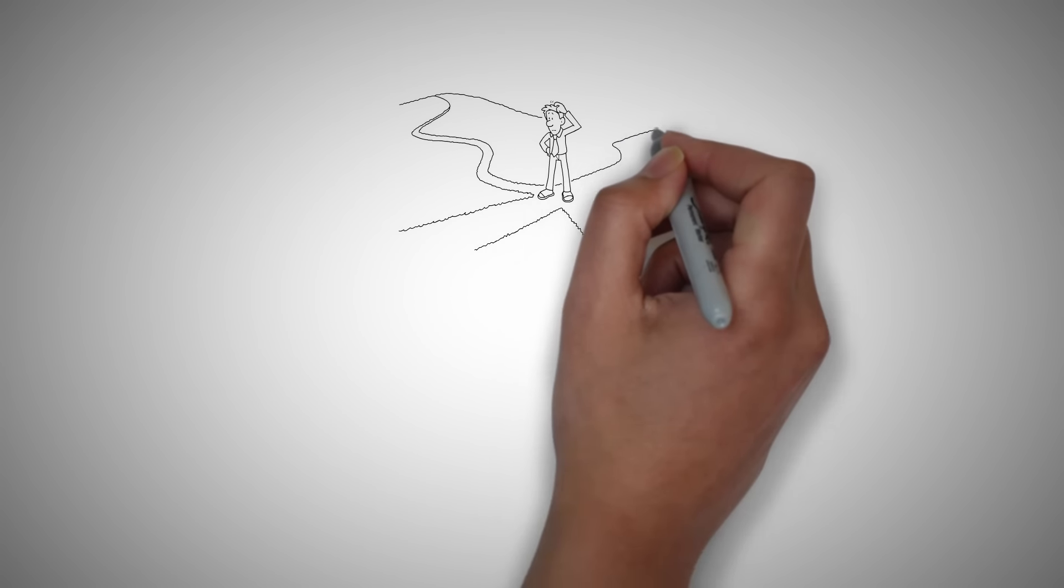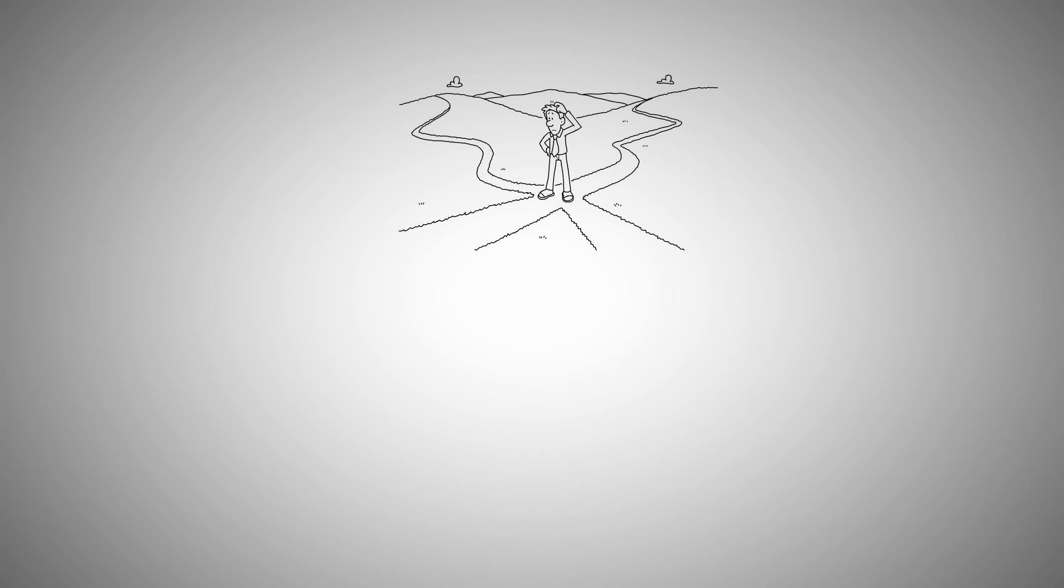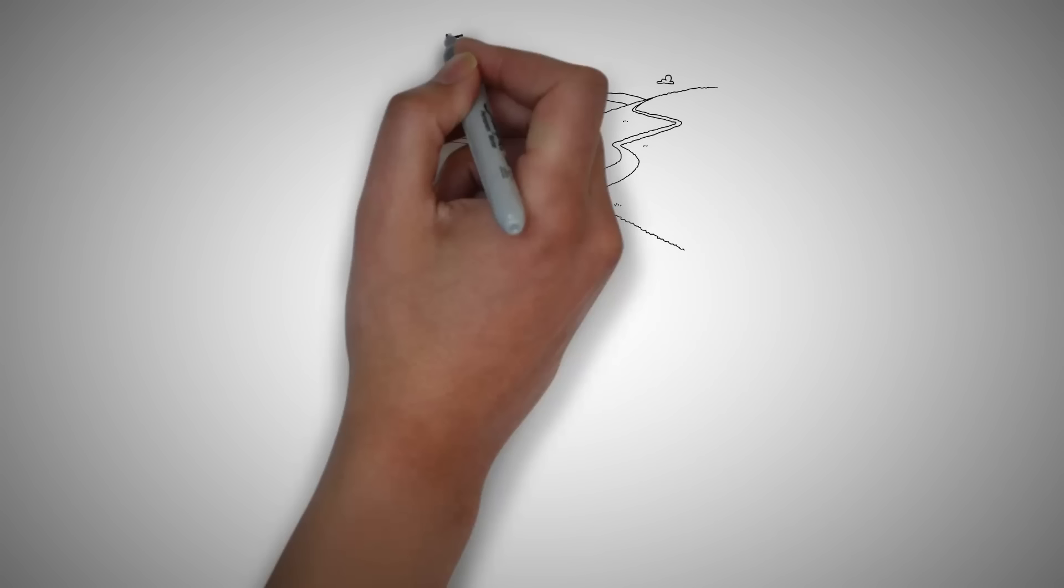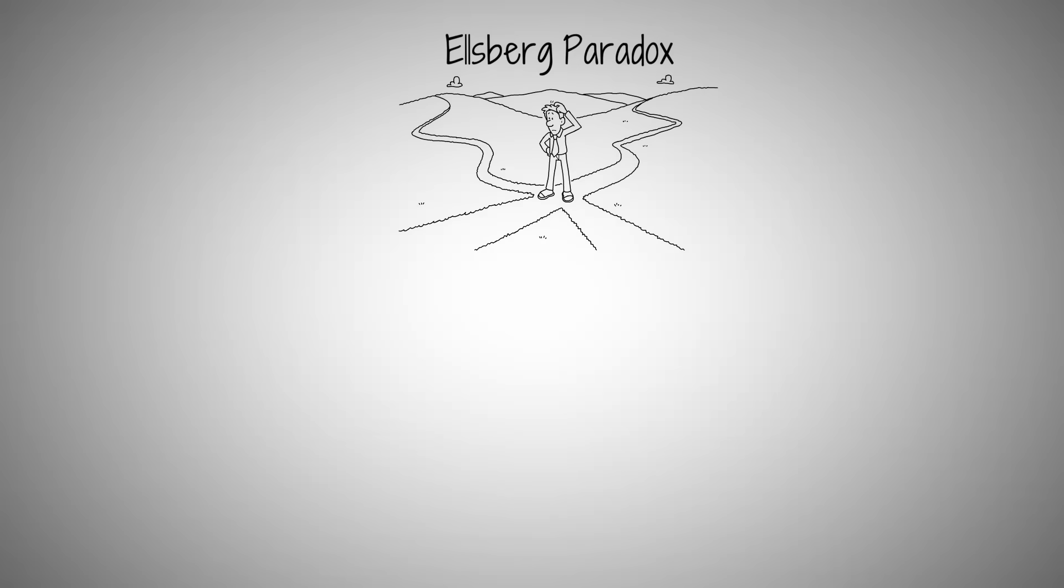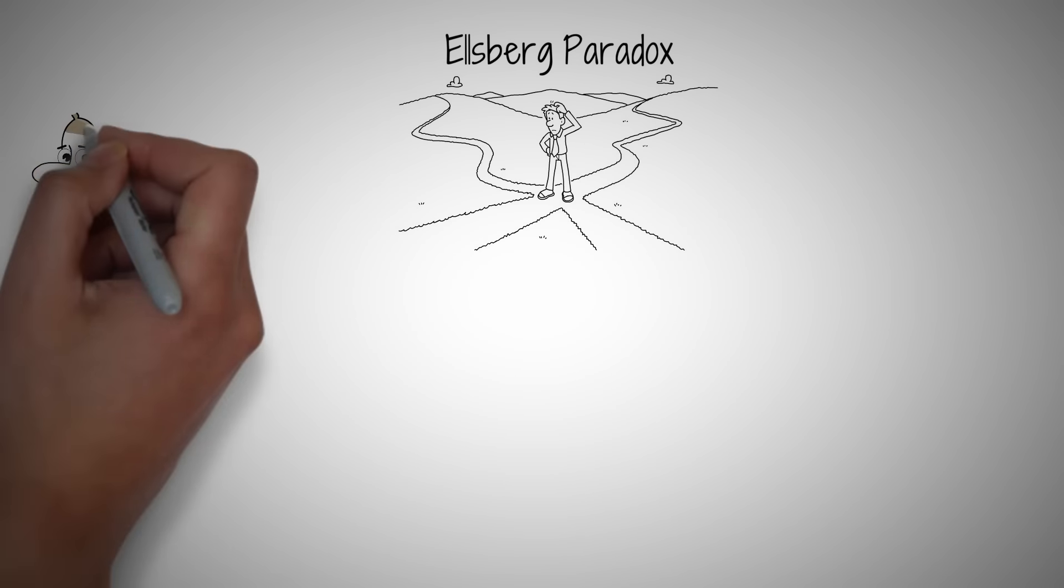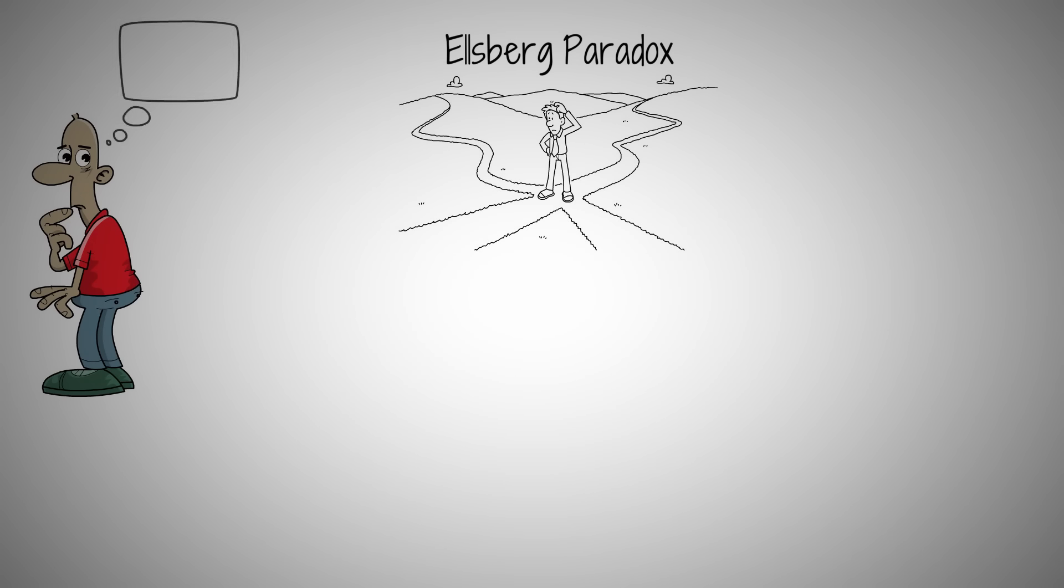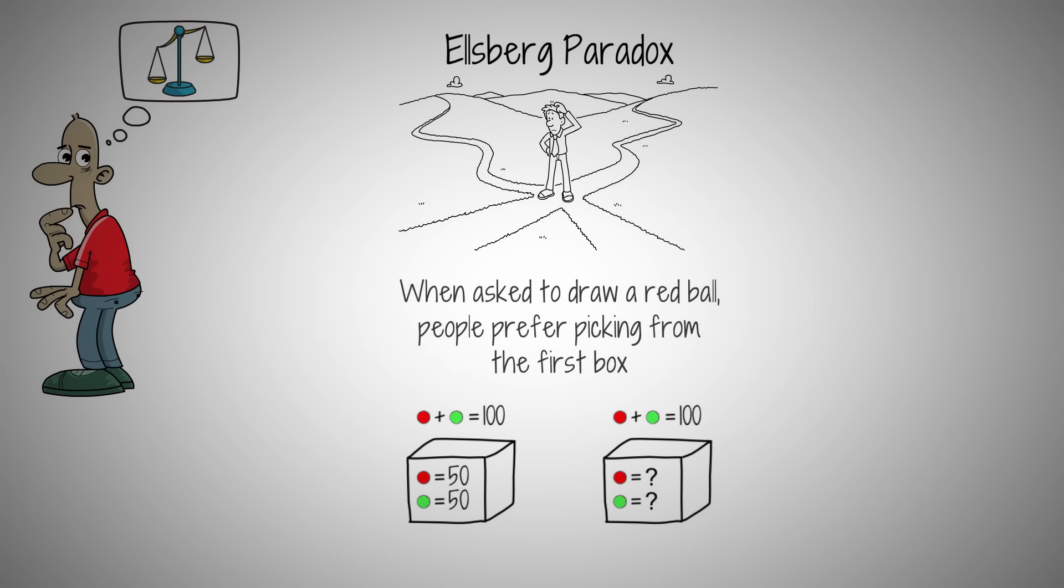Ever puzzled over a tough decision because of unknown outcomes? This is the Ellsberg paradox. Understanding it can transform the way you make decisions. In the 1960s, economist Daniel Ellsberg uncovered a curious pattern. He showed that people fear the unknown, affecting decision-making. He demonstrated how people prefer options with known probabilities over those with unknown probabilities, even when the odds of success are the same. Why? The fear of the unknown often outweighs rational judgment.